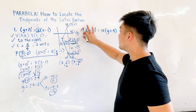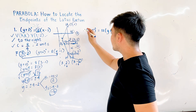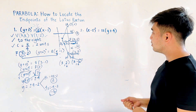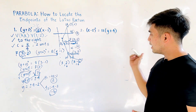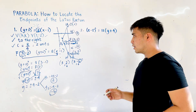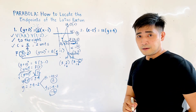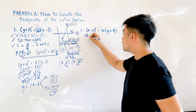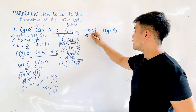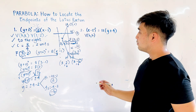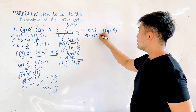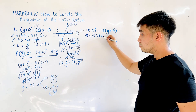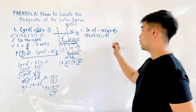Now for the second example. We are given: (x minus 2) squared is equal to 12 times (y plus 4). The first step is to identify the vertex, which is located at (h, k). The vertex is at positive 2, negative 4.